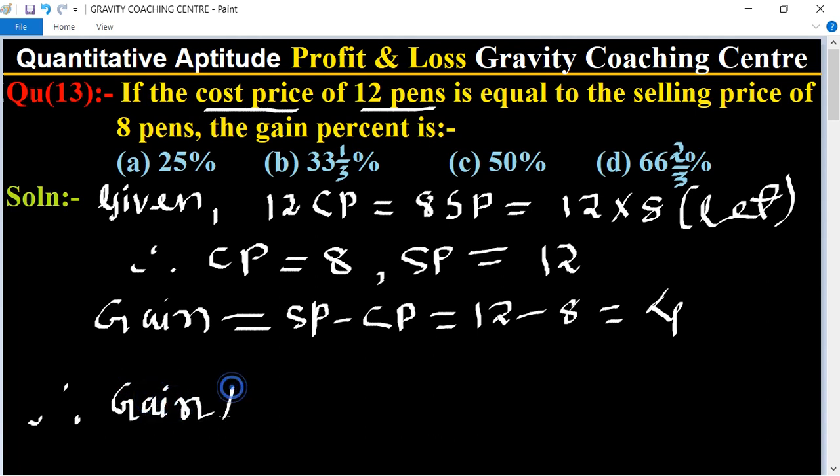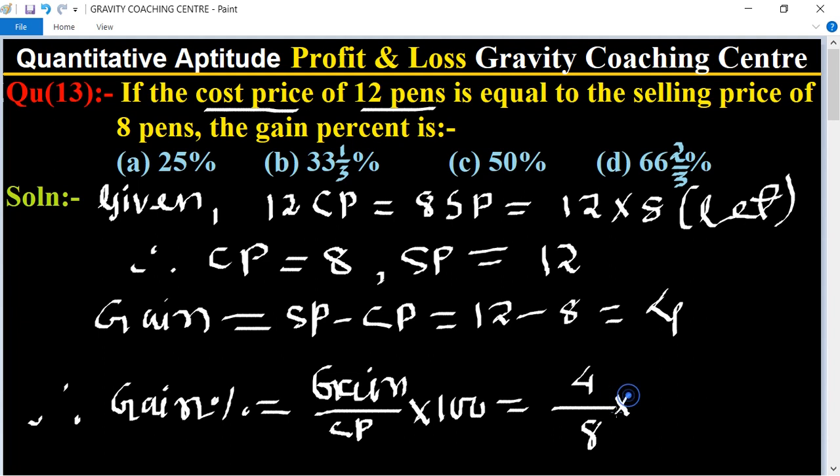Therefore gain percent equal to, its formula is gain upon CP multiply 100. So here gain is 4 and cost price is 8 multiply 100, so 4 into 8 and 50 into 100, so 50 percent is the required answer.